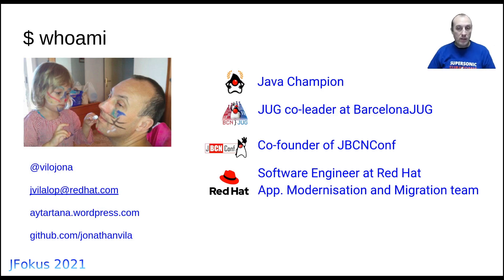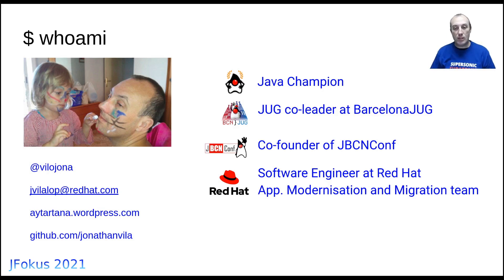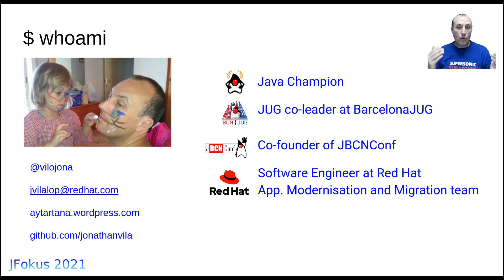I'm Jonathan, from Barcelona in Spain. Recently I was nominated as Java Champion, and I'm also co-leader of the Barcelona Java User Group and co-founder of JBCNConf, a conference we host in Barcelona — we were expecting to host the sixth edition in 2020. I work as a software engineer at Red Hat. You can find my Twitter handle, email, and blog, where you'll find articles for presentations like this one, as well as articles on test containers and other technical topics.